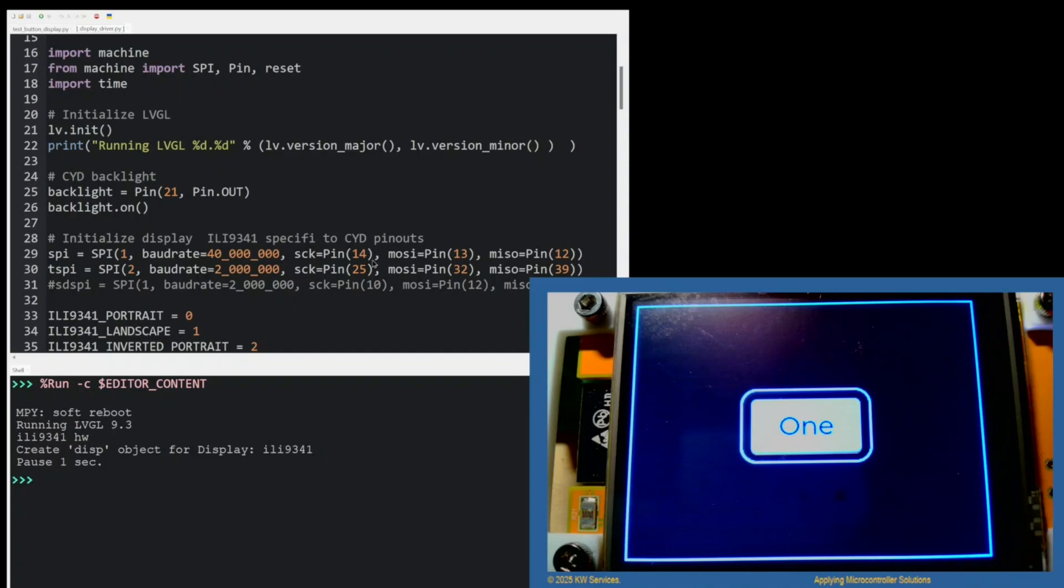Notice that we have pin numbers for the SPI port. Notice also that SPI for the display is different from the touch display. Normally, these would be the same, but on the CYD device, they're hardwired this way. So you must configure the device, the SPI device, with these pin numbers.